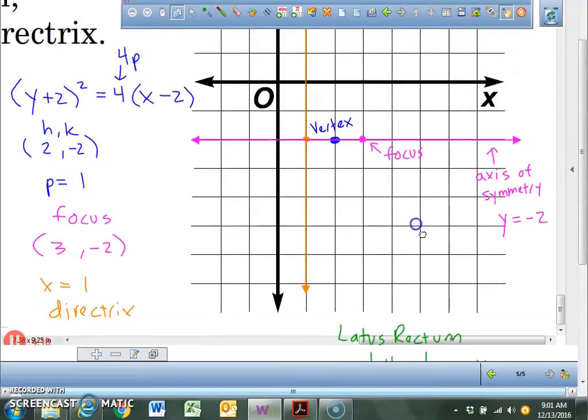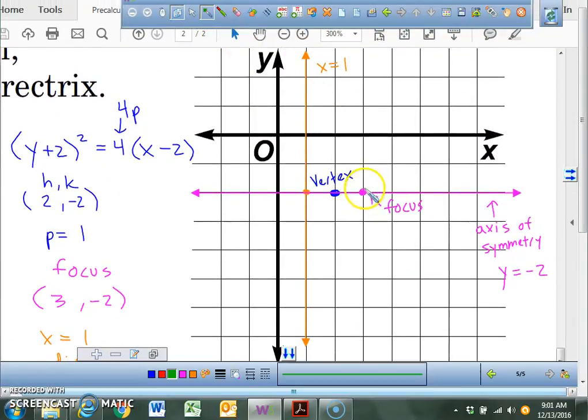Which it passes through the what? Through the focus. So right here, I want you guys to go up 2 units and put a point right here. I want you to go down 2 units and put a point right there. I want you to carefully label the distance between those two points in your journal as a latus rectum.